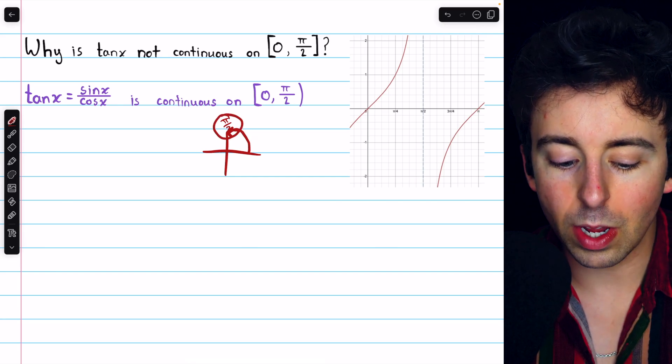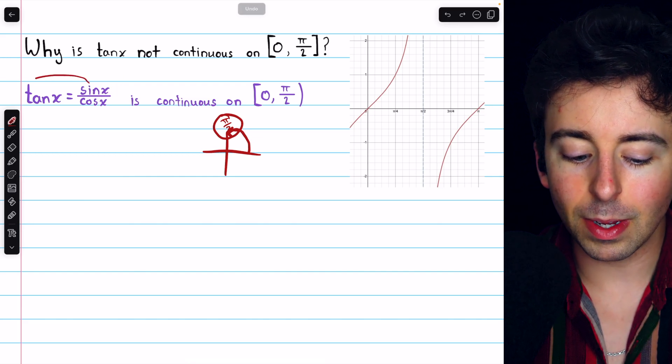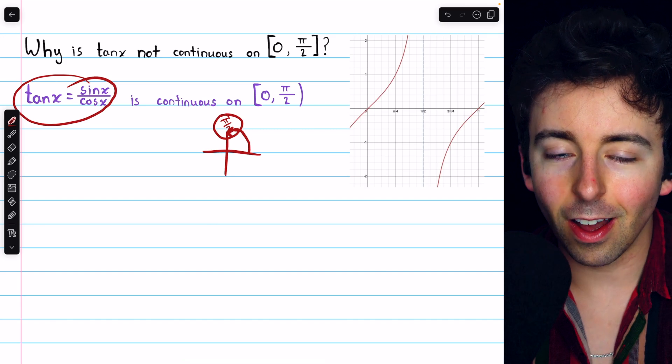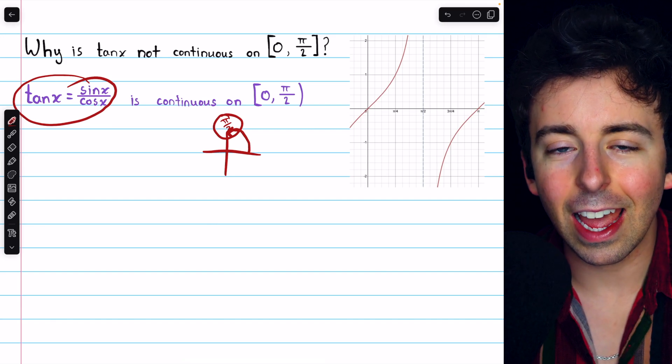So here, we have cosine is equal to 0. Sine happens to be equal to 1. But this means the tangent function is not defined at pi over 2. So it certainly can't be continuous.